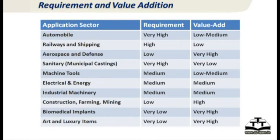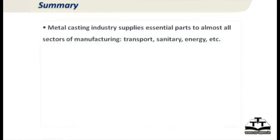Automobiles have low to medium valuation. Whereas aerospace and defense have low but fast-increasing requirement with very high valuation. Decorative items have very low requirement but very high value addition. So you need to pick and choose where you want to play — as an individual company, as a cluster, or as a country. India is a big country, so we can have everything under one roof, but clusters can at least start focusing on certain sectors.